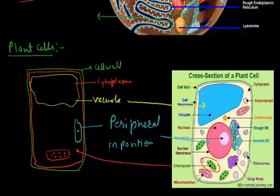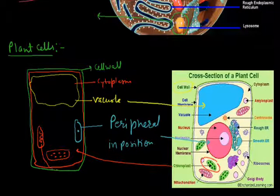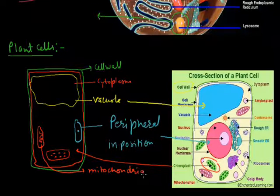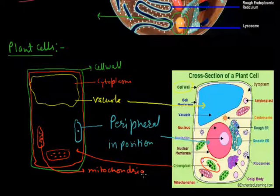Mitochondria are also present in the plant cell and are responsible for energy production. The number of mitochondria depends on the activity of the cell. If the cell requires more energy, it has more mitochondria; if it requires less energy, it has fewer mitochondria.